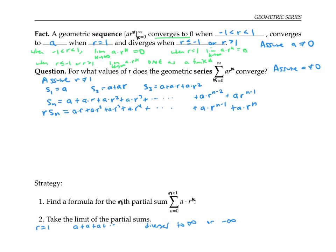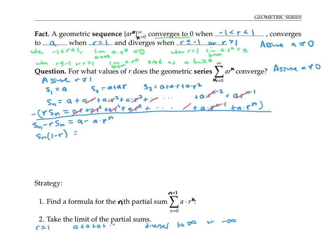Notice that the two equations have a lot of terms in common — they match up along the diagonals. So if I subtract the second equation from the first, on the left side I get Sₙ minus r times Sₙ, and on the right side a lot of terms cancel, leaving just a minus a times r to the n. Now I can factor and solve for Sₙ: factoring out a as well keeps things tidy, and I get that Sₙ equals a times one minus r to the n, over one minus r. I don't have to worry about dividing by one minus r being zero, because we're assuming r is not one.